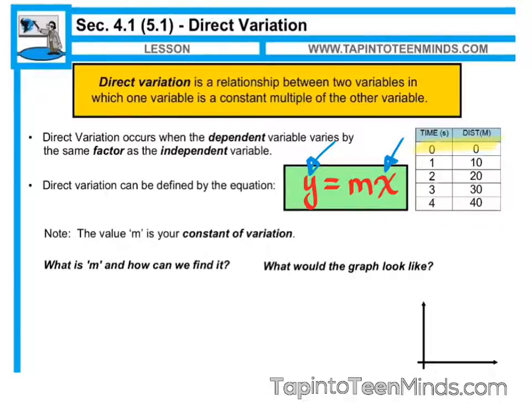In a previous example, we looked at a jogger running at a constant pace of 150 meters per minute. That gave us an equation of y equals 150 times x, or more specifically in that particular scenario, we used d for distance, 150 times t. That was a direct variation.